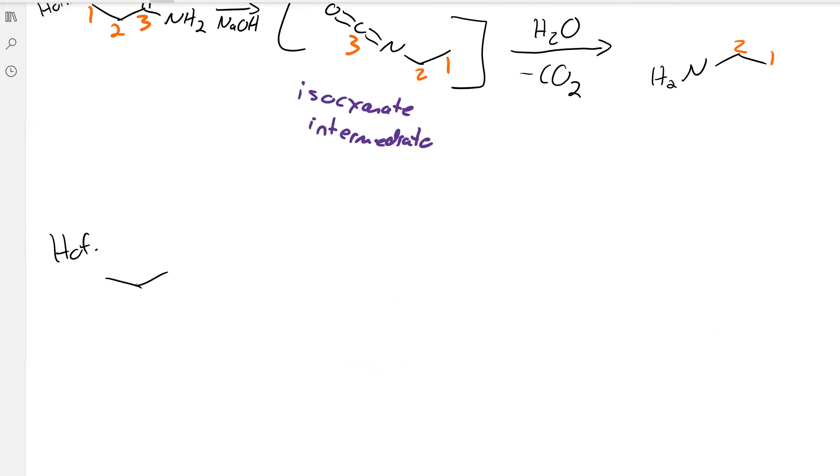So for the Hoffman, you've got your amide. Going to add some base, some sodium hydroxide and some Br2. The sodium hydroxide is going to deprotonate your amide, and then it's going to attack the Br.